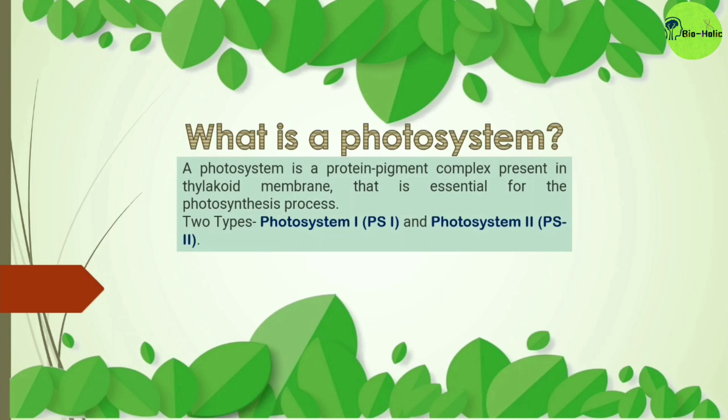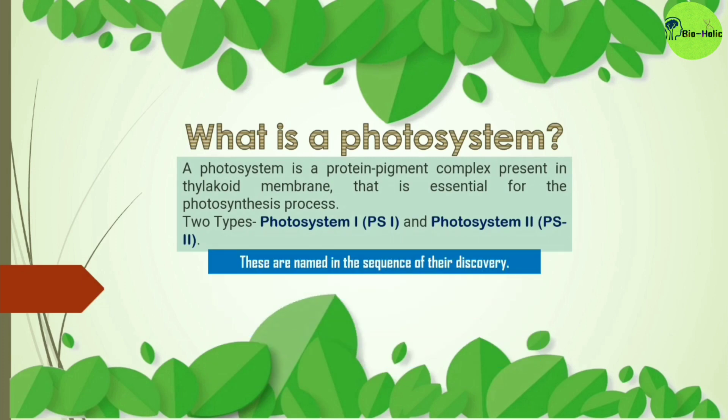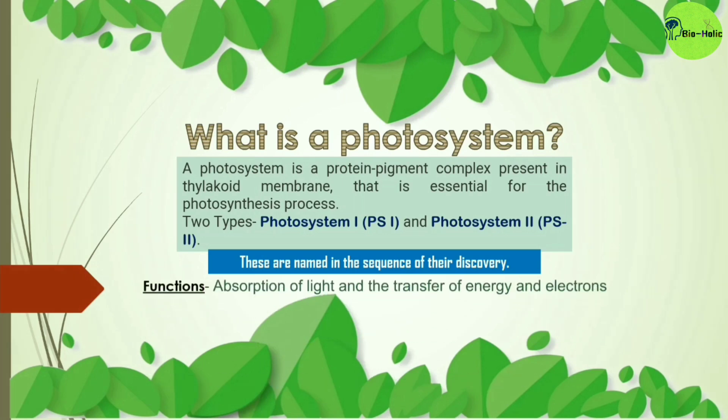Photosystems are mainly of two types: Photosystem 1 and Photosystem 2. These are named in the sequence of their discovery — Photosystem 1 was discovered earlier, and Photosystem 2 was discovered later. The main functions of a photosystem are to absorb light and to facilitate the transfer of energy and electrons.